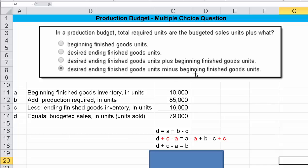Minus A, minus the beginning finished goods. Okay, so algebraically, if we arrange the terms, we see that the correct answer to this multiple choice question is the last one. Budgeted sales plus desired ending finished goods minus beginning finished goods is how we would calculate total required units.